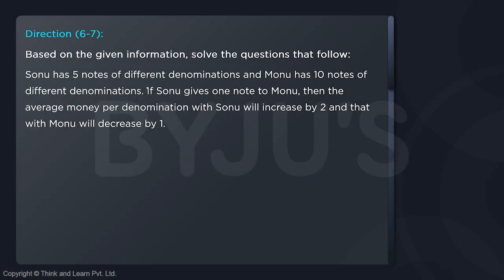The question says Sonu has 5 notes of different denominations and Monu has 10 notes of different denominations. If Sonu gives 1 note to Monu, then the average money per denomination with Sonu will increase by 2 and that with Monu will decrease by 1. Let us say Sonu has 5 notes and the average money is A. Monu has 10 notes and the average is B.